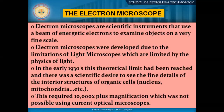Electron microscopes are scientific instruments that use a beam of energetic electrons to examine objects on a very fine scale. Electron microscopes were developed due to the limitations of light microscopes. We have just seen photographs of an integrated circuit where a 3D image and specific patterns are easily recognized, but in the normal microscope that is not possible. By around 1930, the theoretical limit of optical microscopes had been reached and there was a scientific desire to see the fine details of the interior structures of organic-scale specimens, which led to the development of the electron microscope.